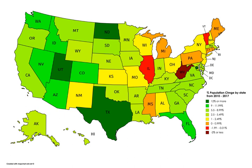The apportionment does not regard the populations of the District of Columbia or U.S. territories such as Guam, the Northern Mariana Islands, Puerto Rico, or the Virgin Islands.